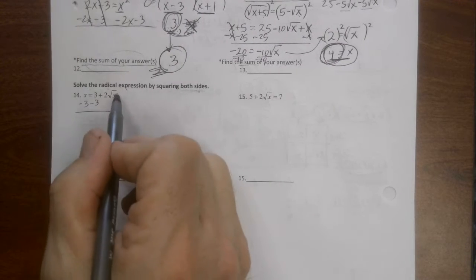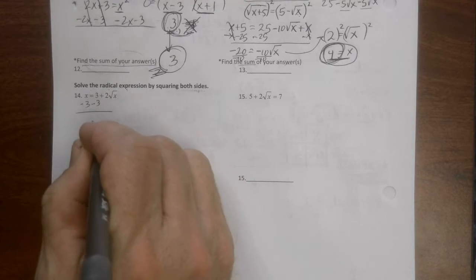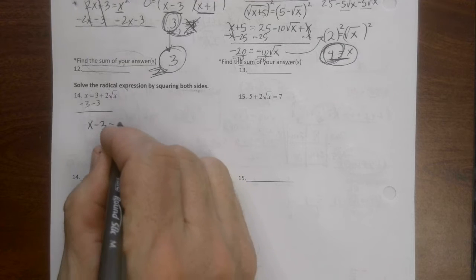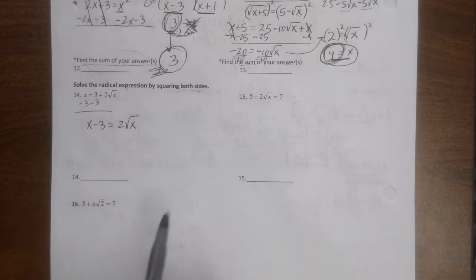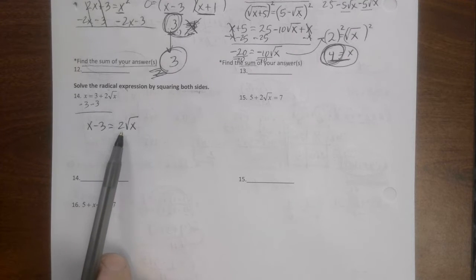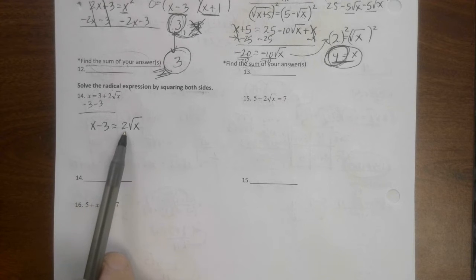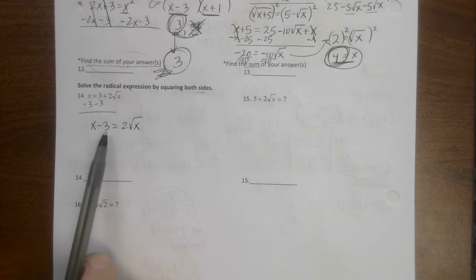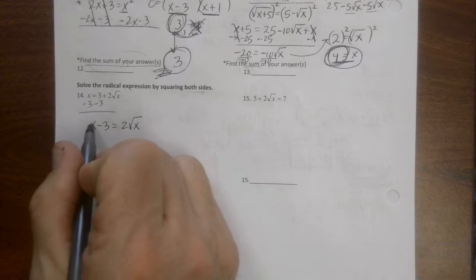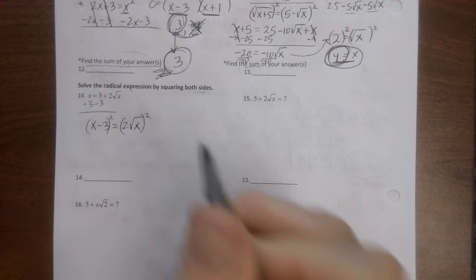The three. Remember, our goal is to isolate the square root before we square it. We get x minus three equals two square root of x. Now we have a decision to make. We can keep the two there and then square both sides, or we can divide both sides by two and then square. I am not going to divide by two because that would create fractions and I don't want to make this messy.